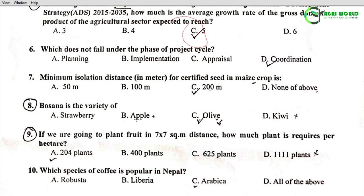Question 6: Which does not fall under the phase of the project cycle? Options: Planning, Implementation, Appraisal, Coordination. Coordination does not fall under the phase of the project cycle.